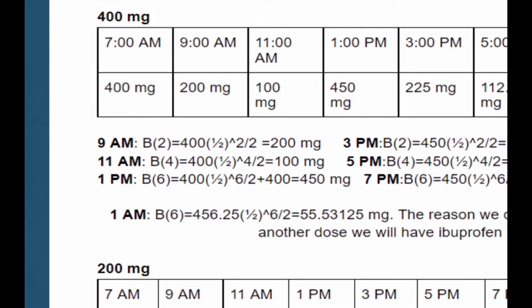At 1pm six hours has passed, so we put T equals six and we add 400 mg. The reason we add 400 is because, as calculated earlier, when taking two tablets or 400 mg of ibuprofen we have to take a dose every six hours. So six hours has passed, we add 400 and get 450 mg.